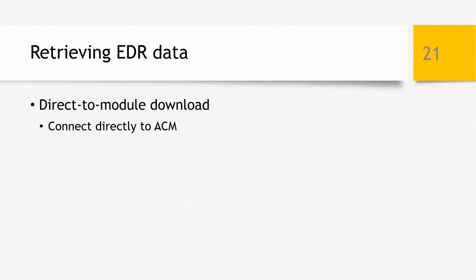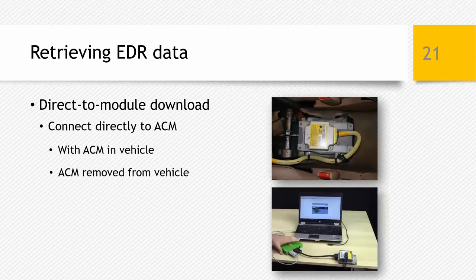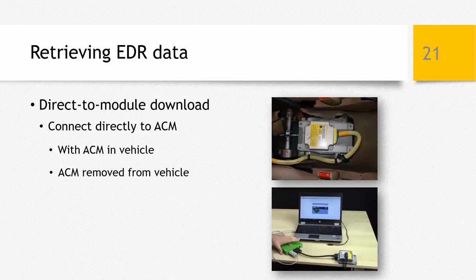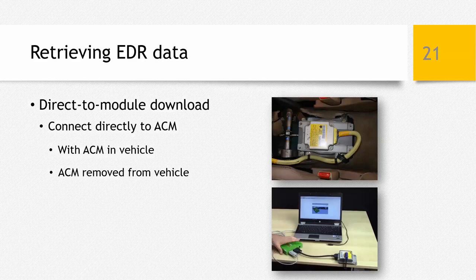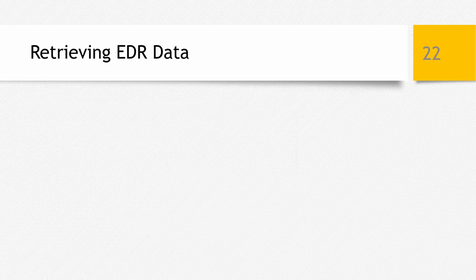If you're dealing with a severely damaged vehicle where the electrical system has been compromised, you'll likely not be able to download data through the OBD port. In that case, you'd need to perform a direct-to-module download by connecting directly to the airbag control module. You disconnect the ACM from the car's wiring harness and use a specific connection cable that matches the ACM. This can be done while the ACM is mounted in the vehicle, or the ACM can be removed and downloaded on a bench. Most insurance companies rely on outside assistance for this type of download, but the capability does exist.